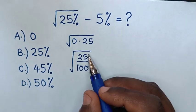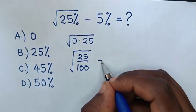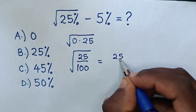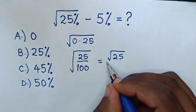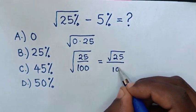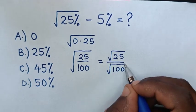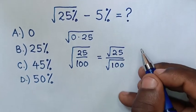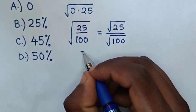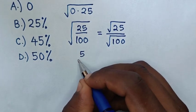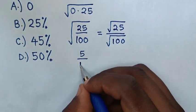Then we break apart this fraction, so it will be equal to square root of 25 over square root of 100. Square root of 25 is 5, and square root of 100 is 10.